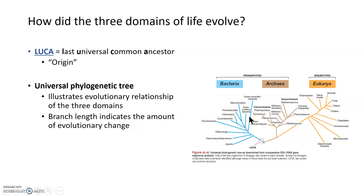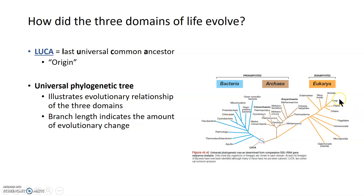For example, if you want to know how evolutionarily divergent a cyanobacteria is from a fungi, you would need to trace this branch down, over, and then back up until you reach fungi — that branch length tells you how divergent those two organisms are. You can imagine that cyanobacteria and thermococcus are more closely related than cyanobacteria and fungi — less divergent, less evolutionary change.